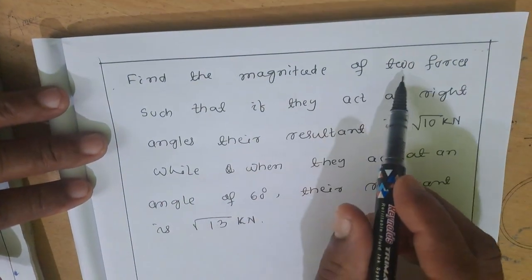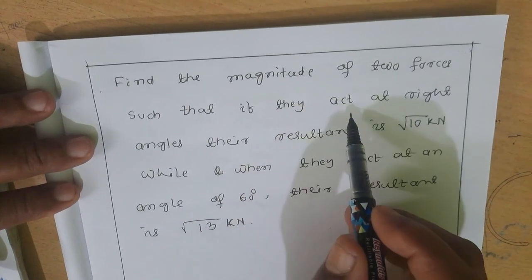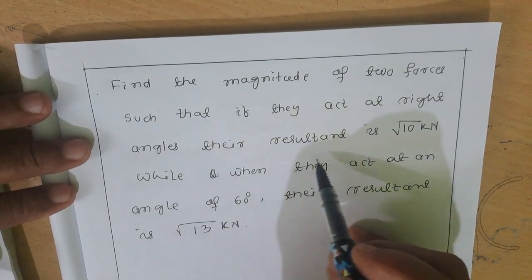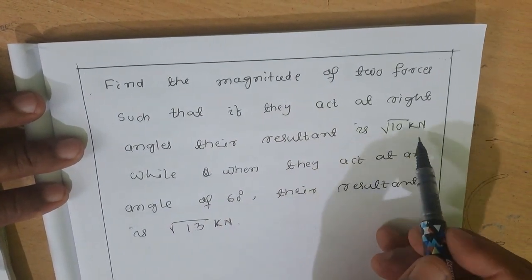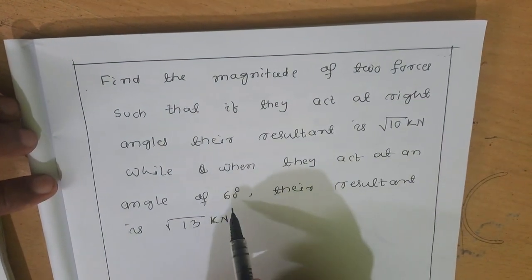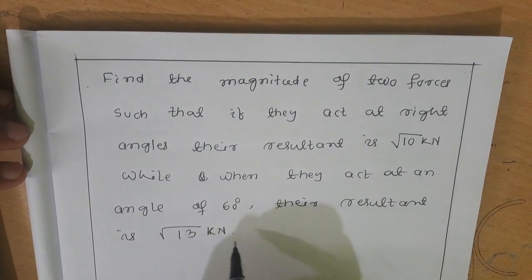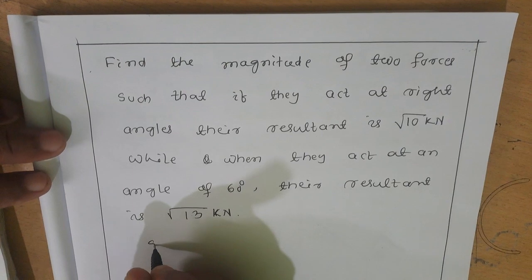Very good morning, my dear students. Today I will discuss some important mechanics problems — second semester mechanics problems for semester examinations. Find the magnitude of two forces such that if they act at right angles, their resultant is √10 kN. While when they act at an angle of 60 degrees, their resultant is √13 kN. Solution: